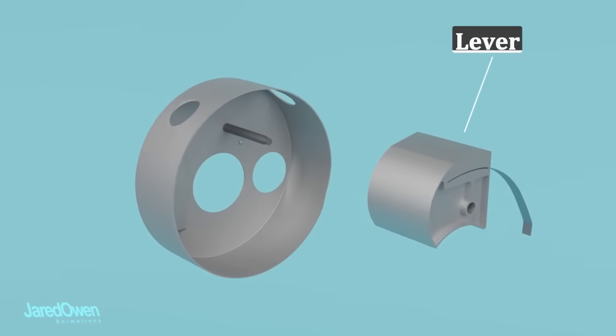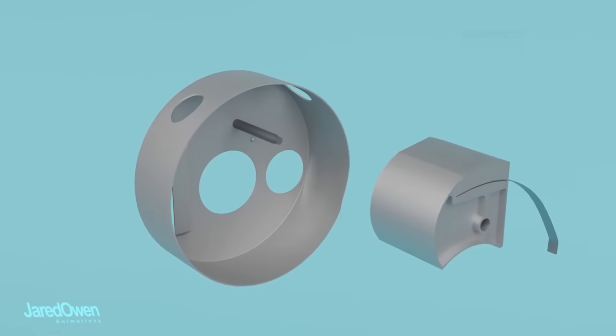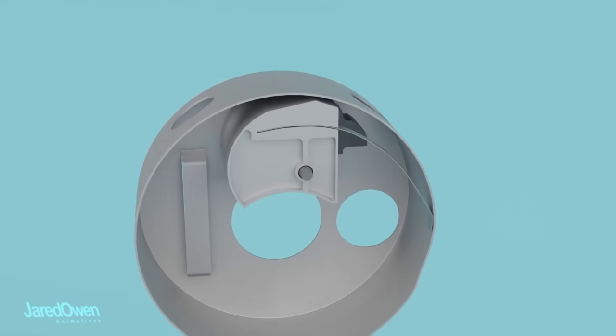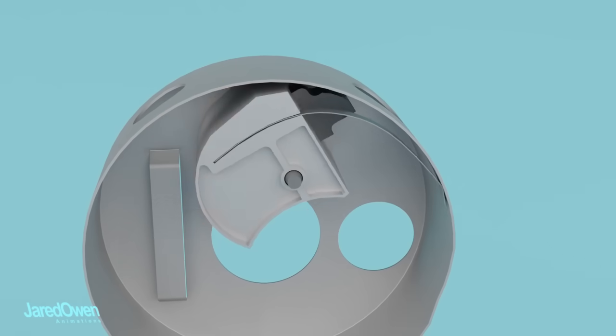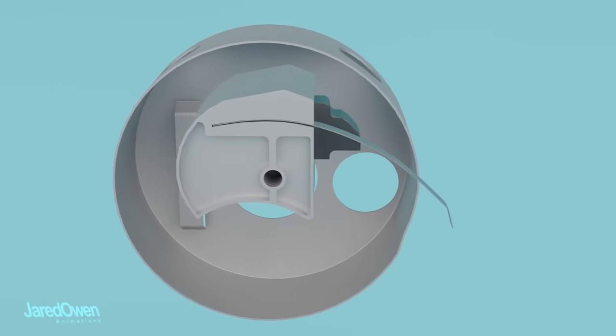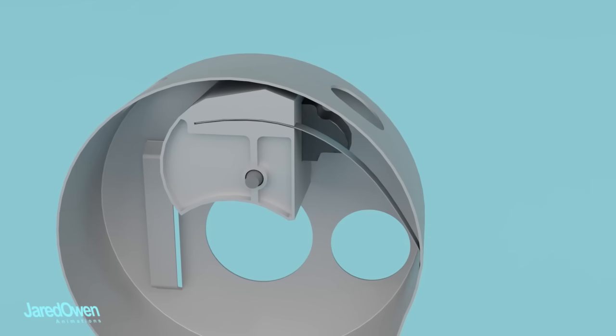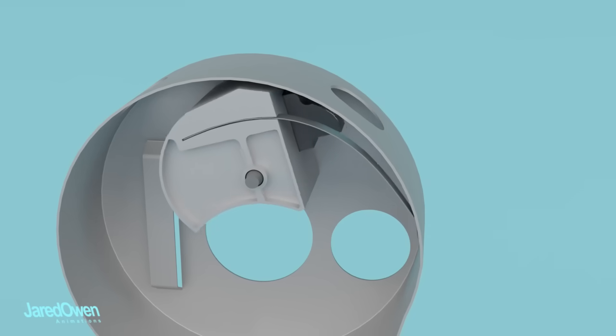This piece is called the lever. It slides right onto the bar here. The lever can rotate counter-clockwise. This piece of metal wants to flex outward. Once it's bent inside of here, the tension makes the latch want to spring back to its original position.